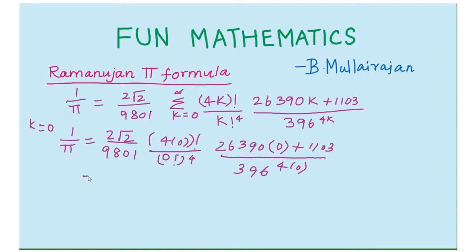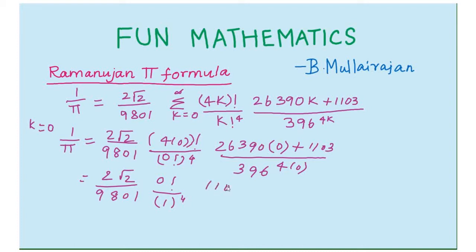Now, 2 root 2 by 9801: 4 into 0 factorial equals 0 factorial, and 0 factorial is equal to 1, so 1 to the power 4 is 1. Then 26390 into 0 is equal to 0, so we write 1103 divided by 396 to the power 4.